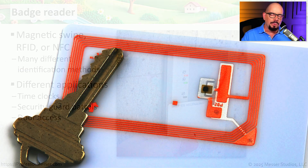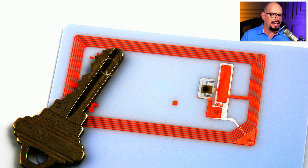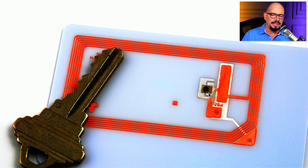If you were to carefully cut your access card in half to see what was inside, you'd see something like this. There is an RFID chip right in the middle, connected to an antenna that wraps around the inside of the card.